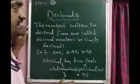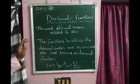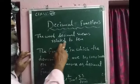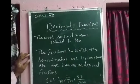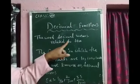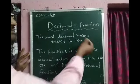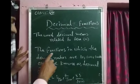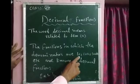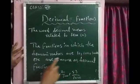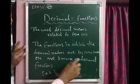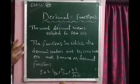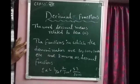Now we are going to learn decimal fractions. The word decimal means related to 10. The fractions in which the denominators are 10, 100, 1000, etc., are known as decimal fractions. Examples: 2 by 10, 7 by 100, 53 by 1000 — these fractions are called decimal fractions.